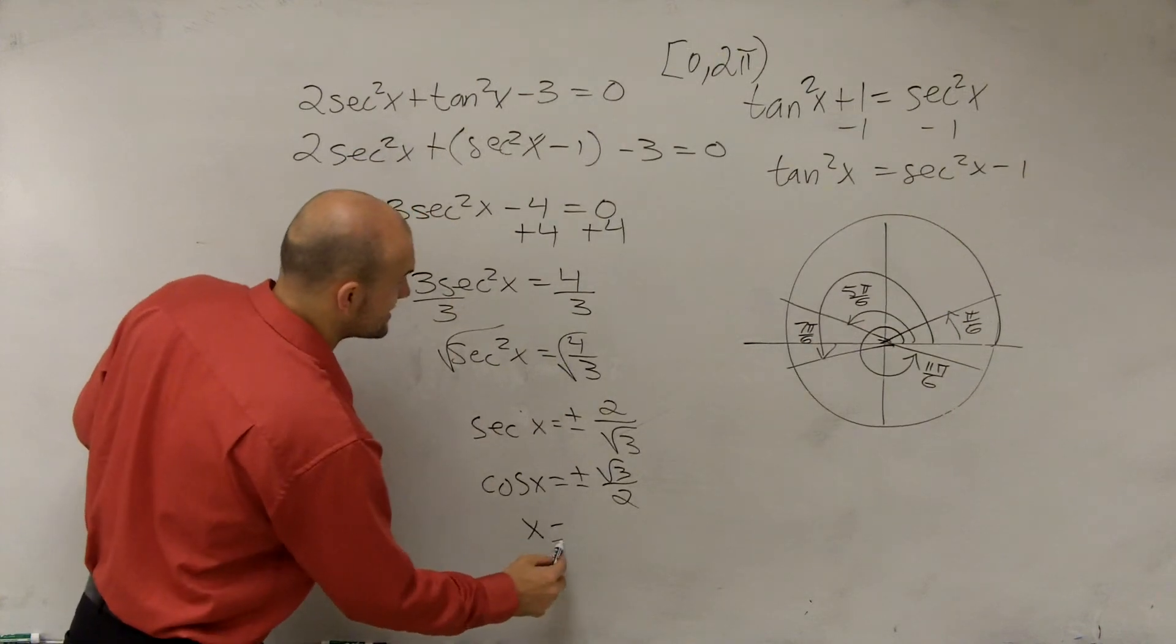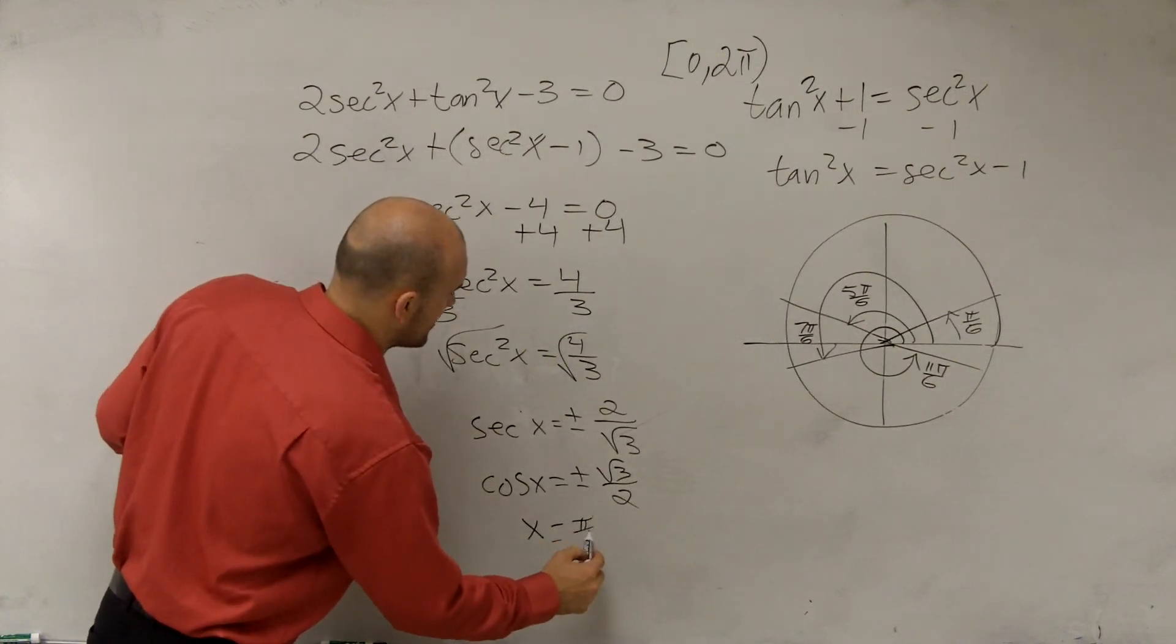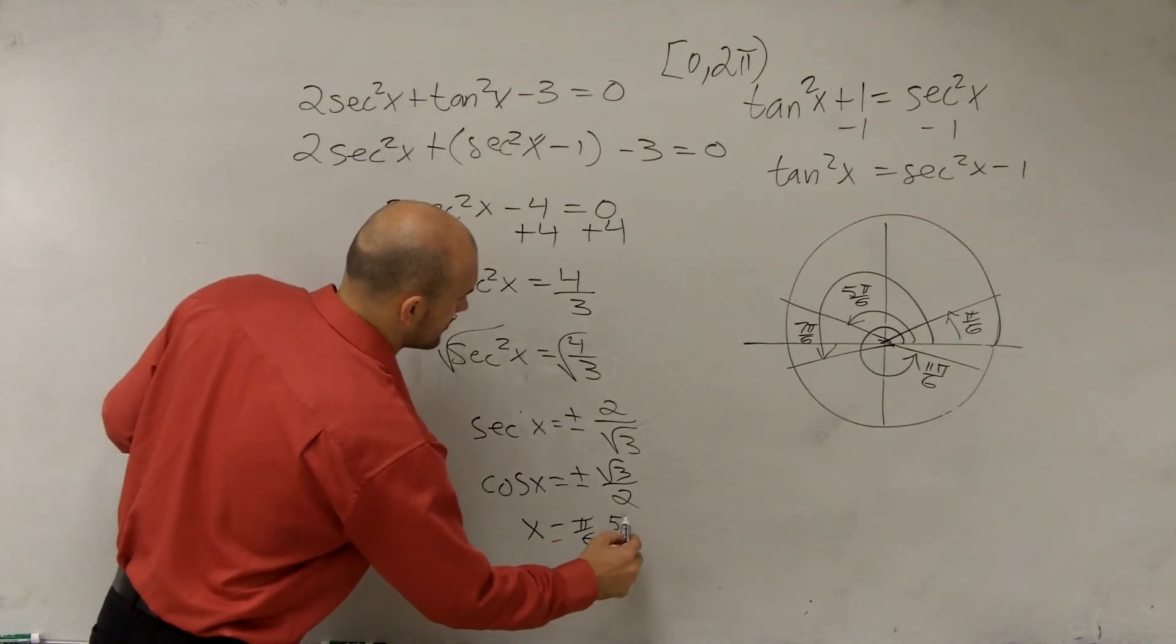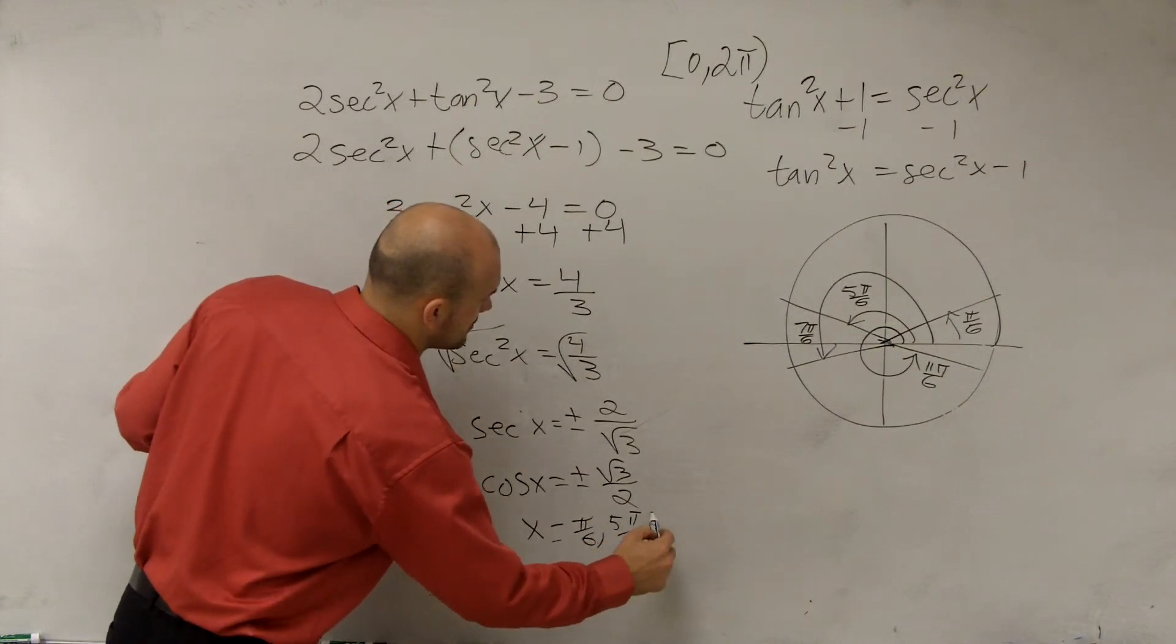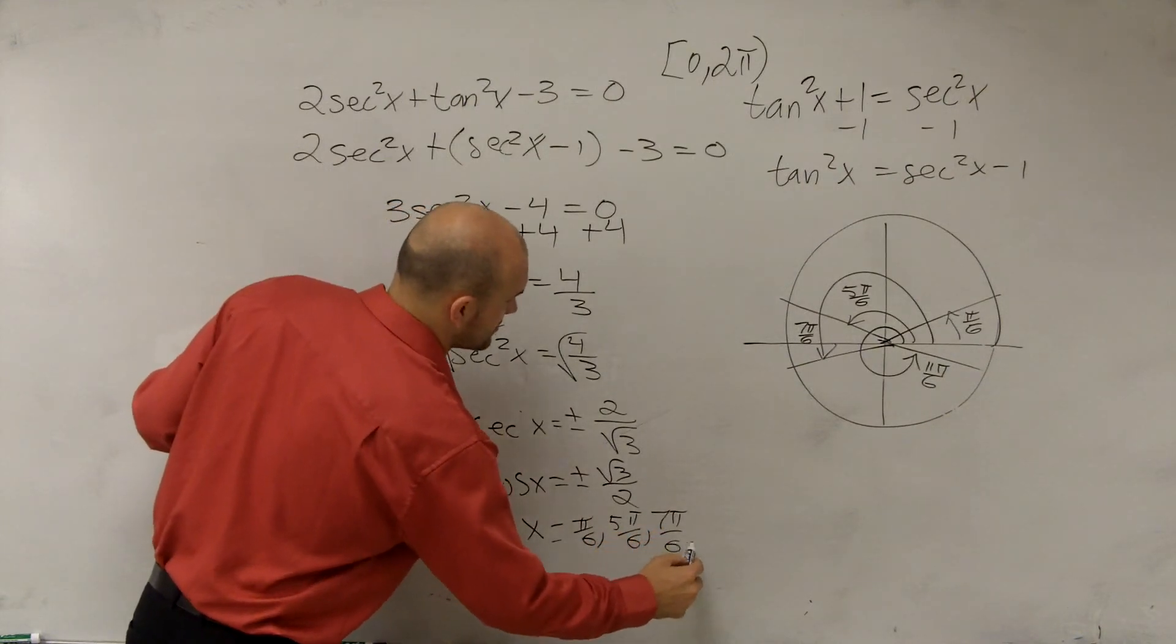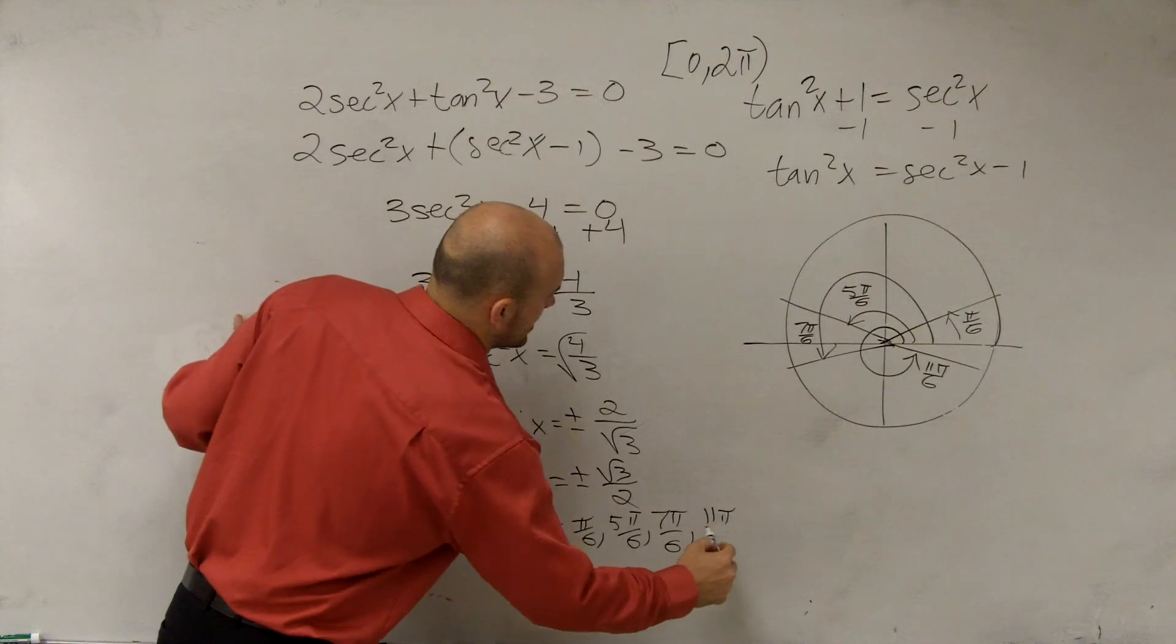So therefore, I can say x equals pi over 6, 5 pi over 6, 7 pi over 6, and 11 pi over 6.